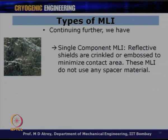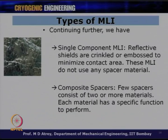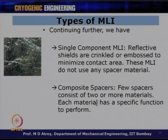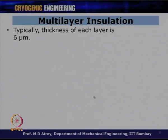Single component MLI, also called crinkled multilayer insulation, uses point contact rather than area contact to minimize solid conduction. Composite spacers are also possible, consisting of two or more materials each with a specific function. Typically, the thickness of each layer is around 6 micrometers. Residual gas conduction inside the insulation depends on residual pressure, and in good vacuum this can be considered zero.